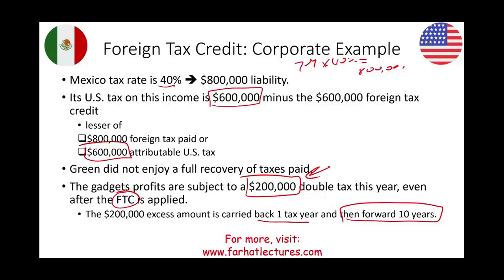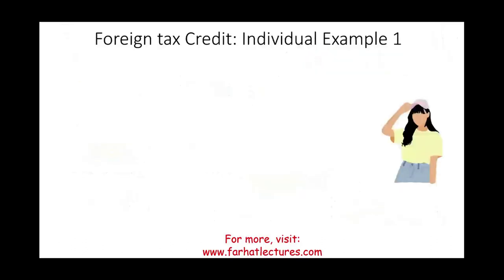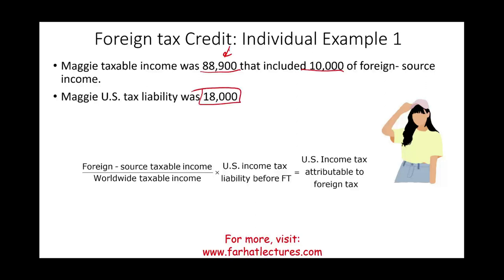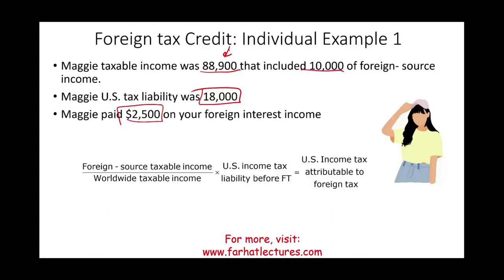This was an example of a corporation — now let's take a look at an individual. Let's look at Maggie. Her taxable income was $88,900, which included $10,000 in foreign-source income. Maggie computed her US tax liability, and it was $18,000. Also, Maggie paid $2,500 on her foreign interest income.